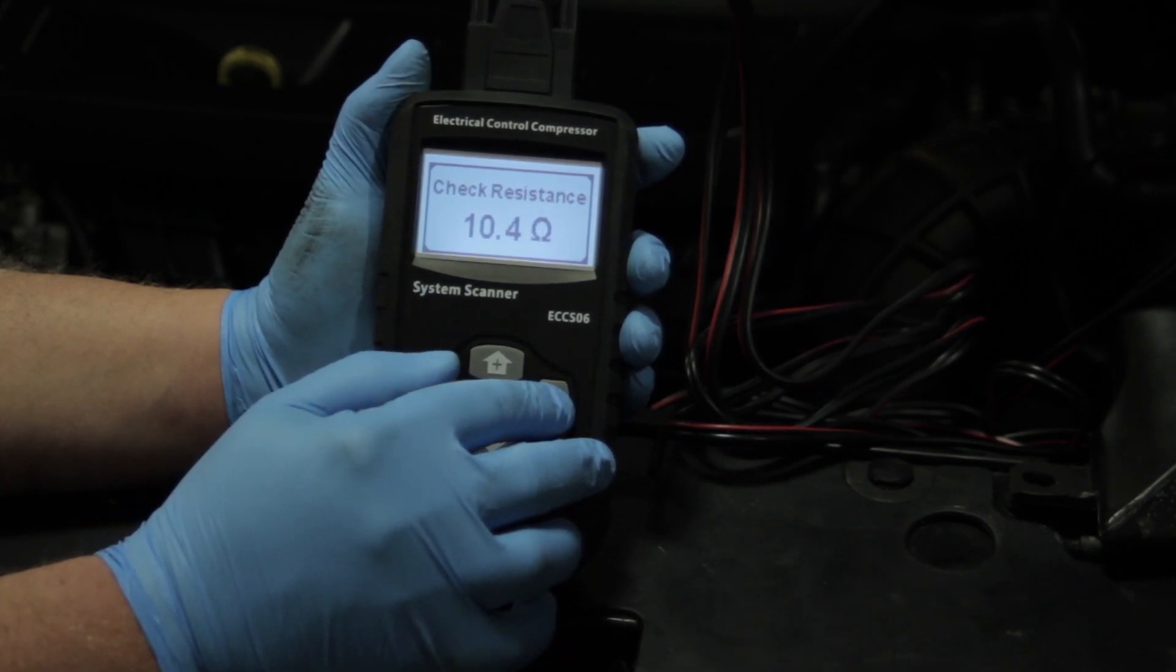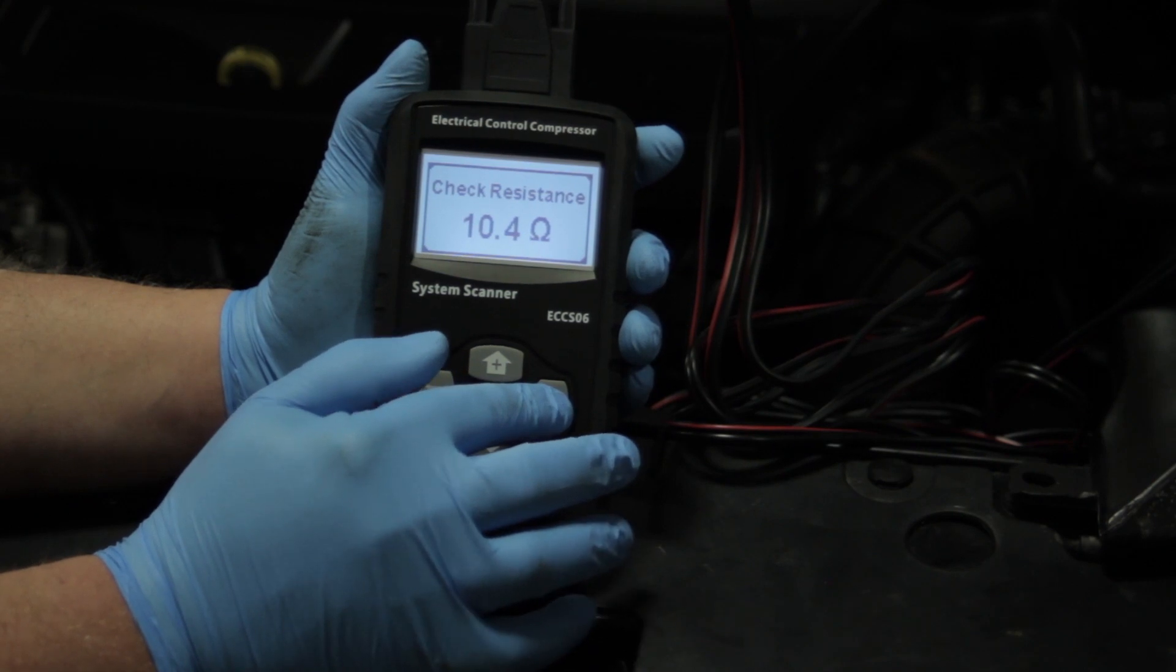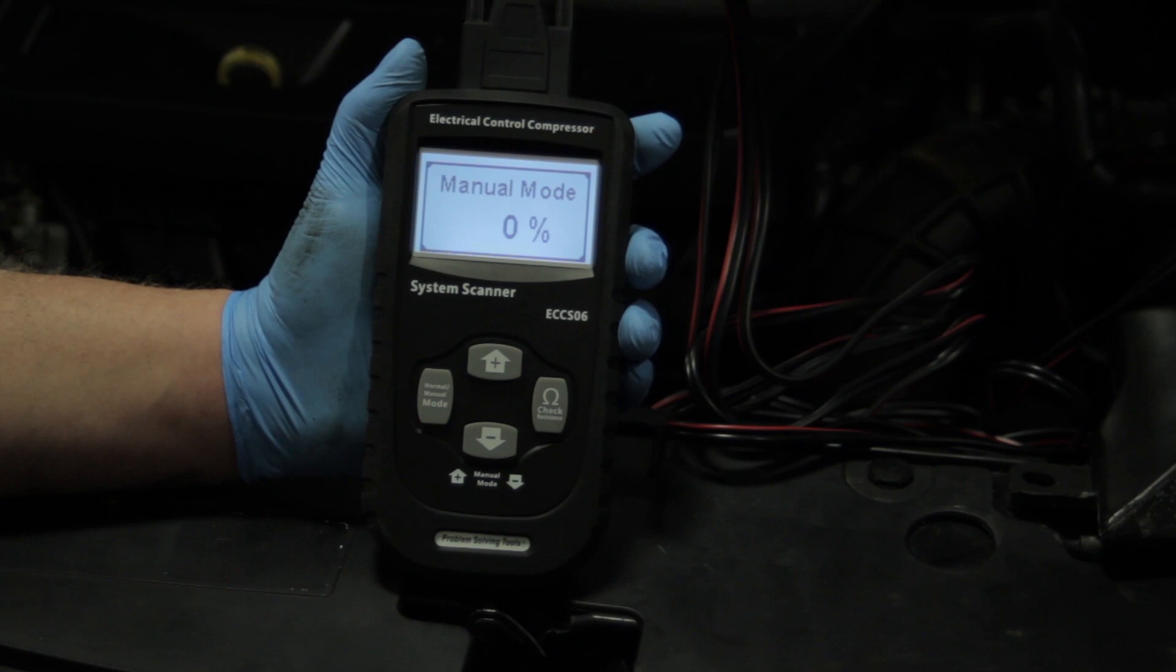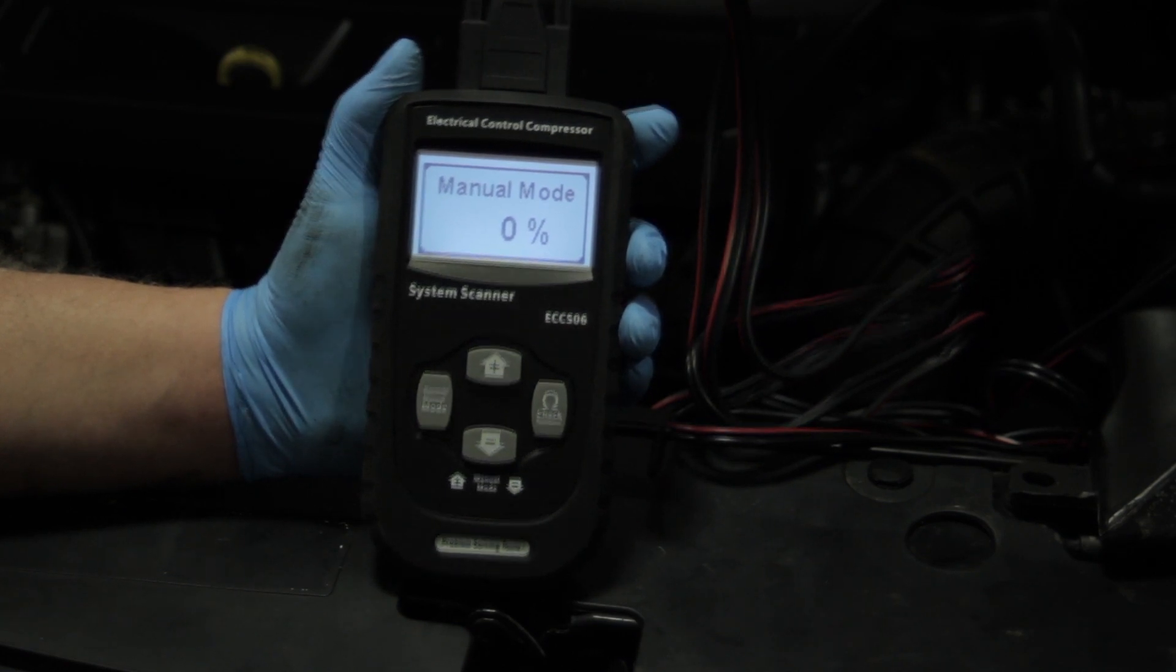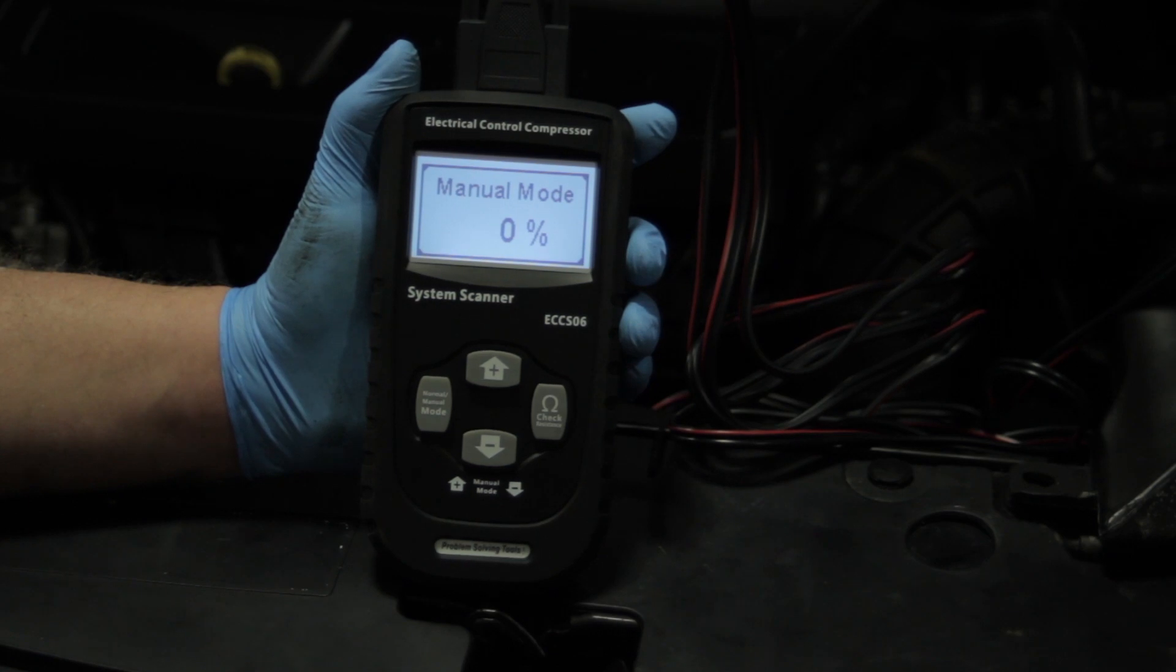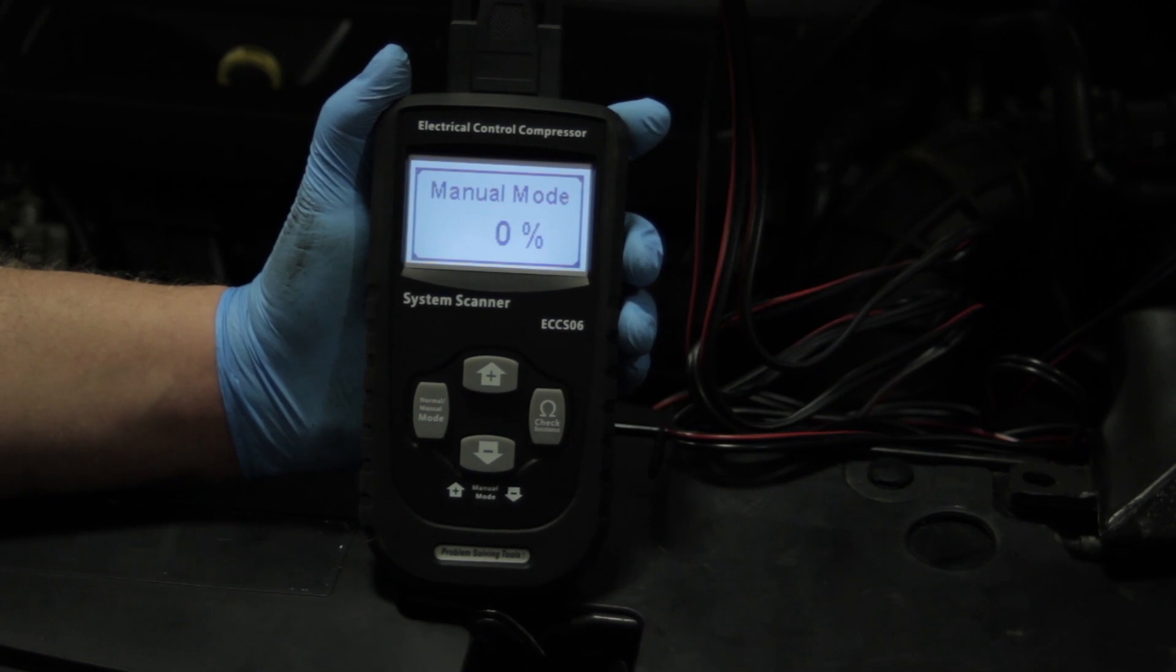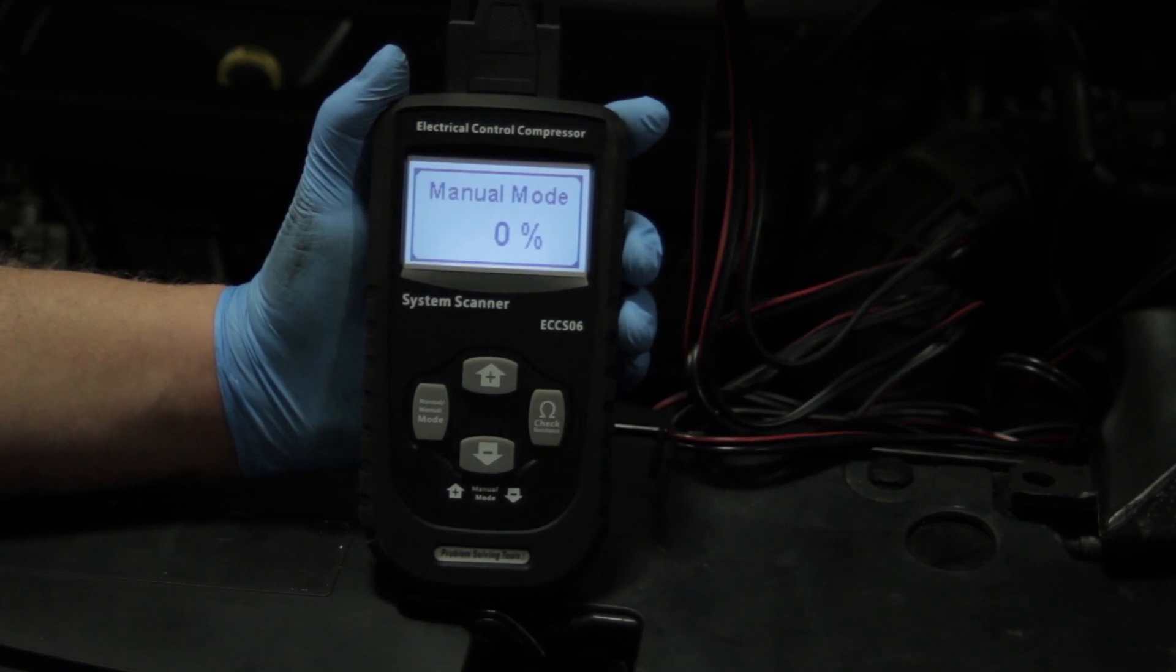You want to see between 10 and 14 ohms, typically, of resistance on most electronic variable displacement compressors. You might want to refer to service information to find out the exact spec for the vehicle you're working on, but 10 to 14 ohms is the typical range we find in most vehicles. Knowing that that is okay, now let's start the vehicle up.